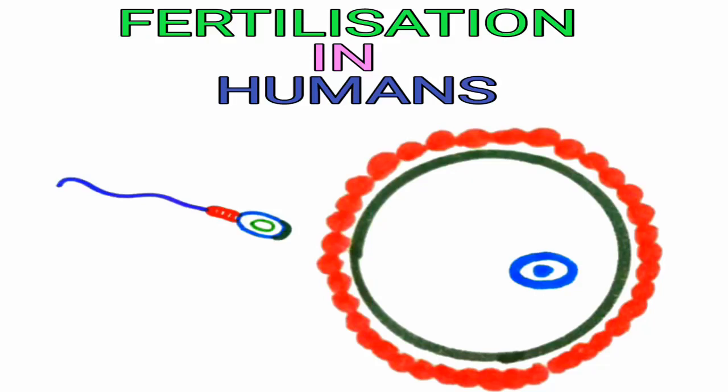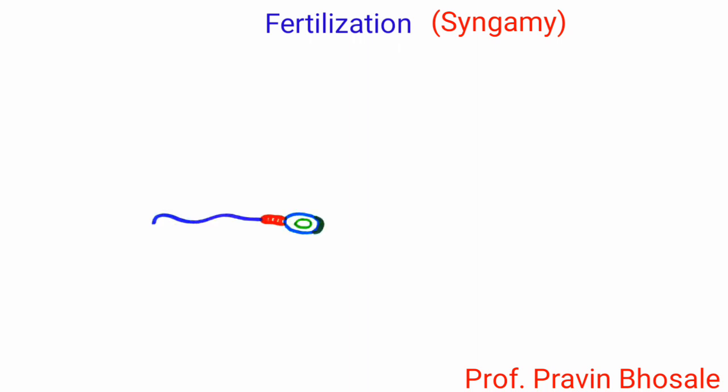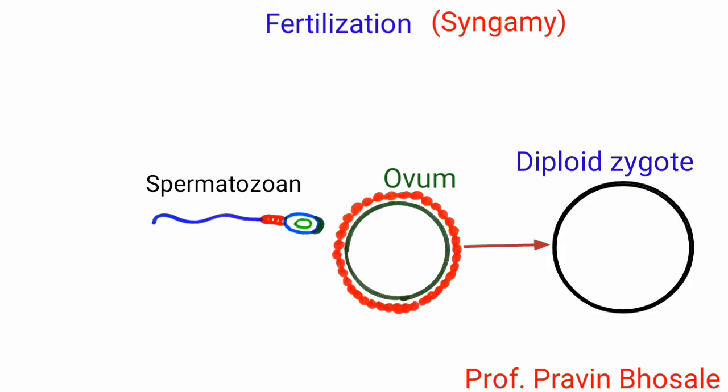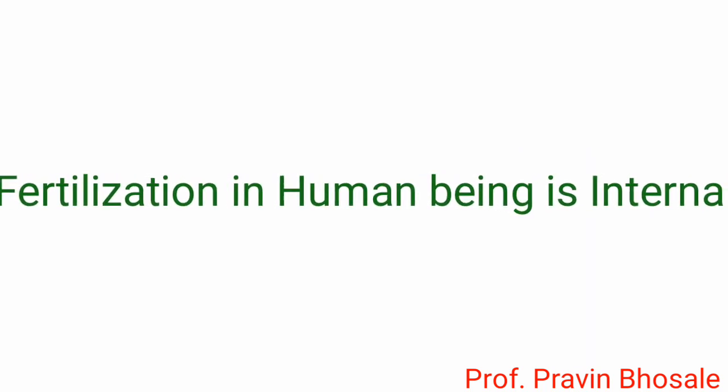Today we will revise about fertilization in humans. Fertilization is called syngamy. It is a process during which fusion of a haploid male gamete, that is spermatozoan, and a haploid female gamete, that is ovum, takes place so as to form a diploid zygote.